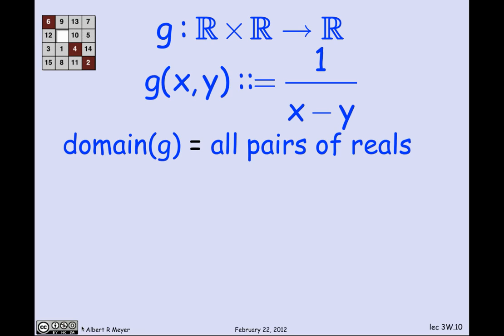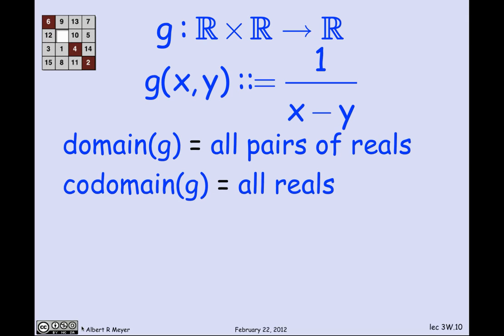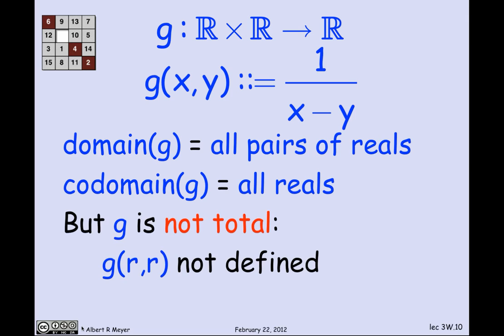The domain of function g is all pairs of reals — that's what it means to say it goes from R cross R (shorthand R squared) to codomain R, the set of all reals. But g is obviously not total, because 1 over 0 is not defined, which means that on the 45-degree line where x equals y, g is not defined. So g is not a total function, even though it's familiar — you wouldn't normally notice that it's partial because you're not used to paying attention to that.